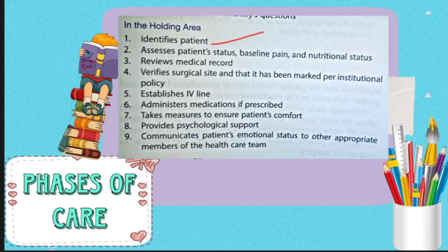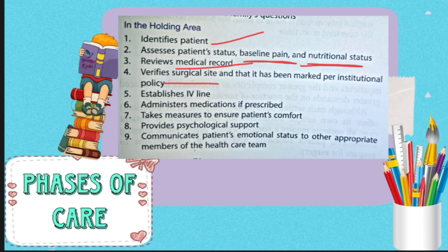In preoperative care, first we need to identify the correct patient and take their history — whether this is the first time they are undergoing this condition or they have undergone it before. We need to assess the pain level, which is classified as mild, moderate, or severe, and the nutrition level — whether they are under-nourished, over-nourished, or in an obesity condition. Using signs and symptoms, we can prepare a care plan to provide quality care. The physician performing the surgery will mark the surgical site and we need to maintain it.